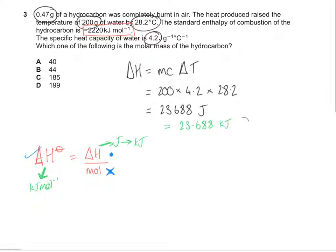Then put that into your equation. So the standard enthalpy change is minus 2,220 is equal to the enthalpy change for the amount that I have which I worked out as 23.688. And realistically that's going to be minus as well because it's going to be exothermic just so that our signs cancel out.